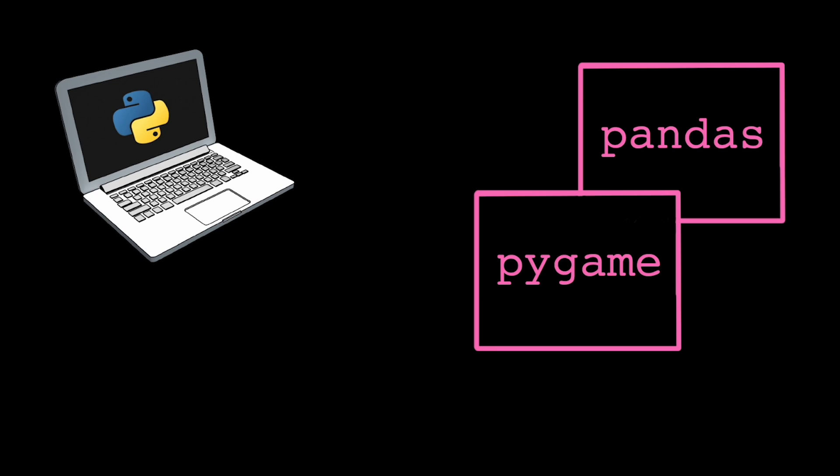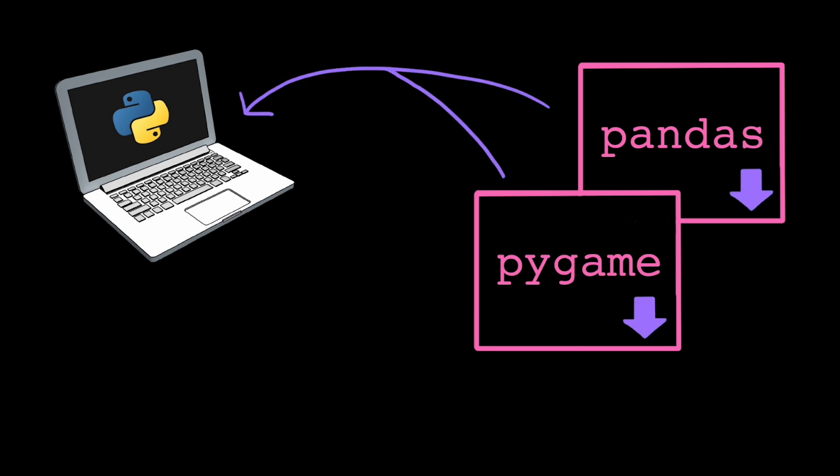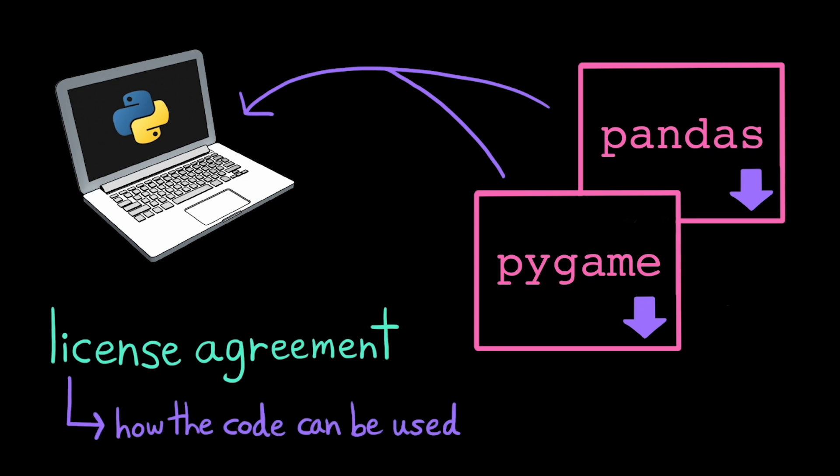There are many other modules out there that programmers have made available for general use, but they don't come pre-installed with Python. We have to download the module code off the internet and install it to make it available to import into our programs. With these modules, we need to be careful about plagiarism. We can't just use any code we want as if it's our own without giving credit to the original creator. Programmers can decide how other people can use their module through a license agreement. Some common licenses like MIT and Apache are open source, which means they largely allow anyone to use, modify, or distribute the code as they please.